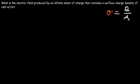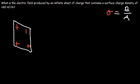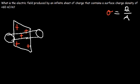Well, let's begin by drawing a picture. So let's say this is our sheet of charge, and it has a positive charge distributed through its surface. Now we're going to use a cylinder. The positive charge inside that Gaussian cylinder is going to emit an electric field that exits the cylinder in both directions.